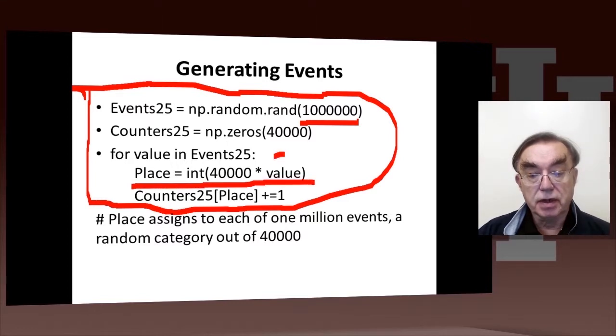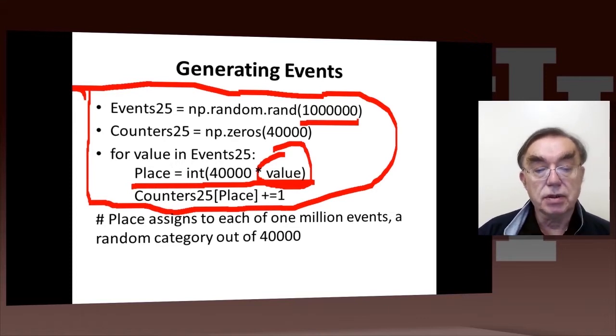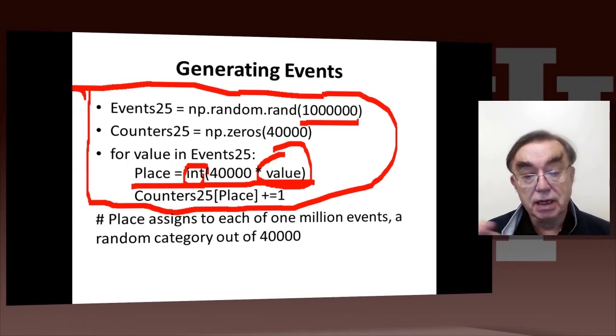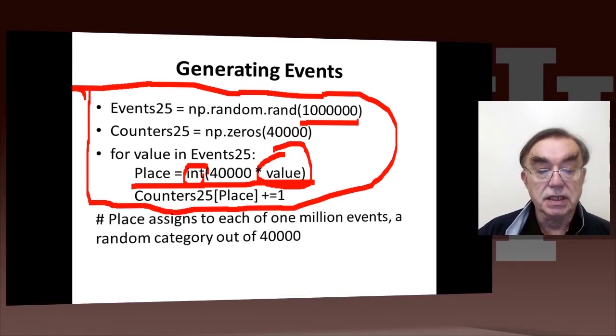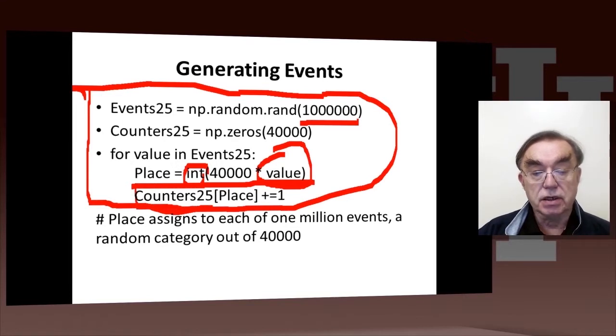We convert, we take the unit, the number between 0 and 1, multiply it by 40,000. That gives us a number between 0 and 40,000, or 40,000 minus a little bit, because we'll never get the value 1. And then we make it into an integer, which runs between 0 and 39999. And then we increment, that's the place, or the result, or the answer, or the physics final state, or the 40,000 possible final states. And we increment the counter corresponding to this place. So this counter here is the thing that gets histogrammed.